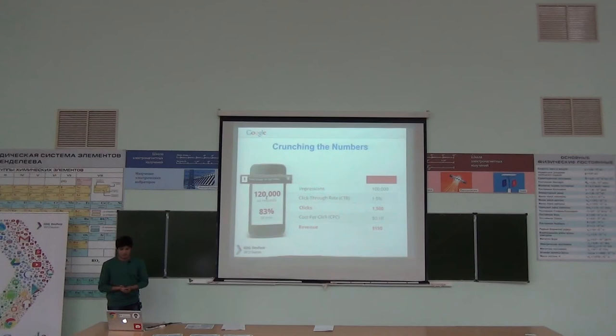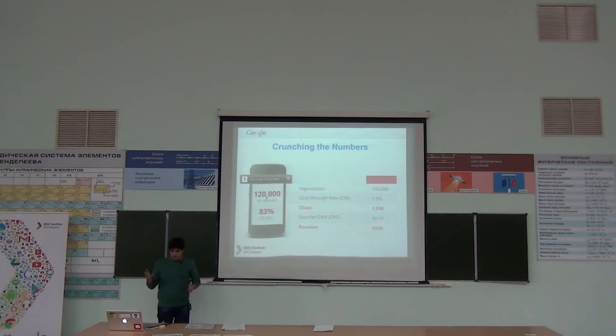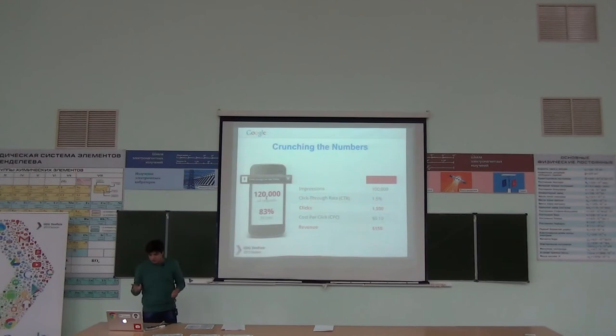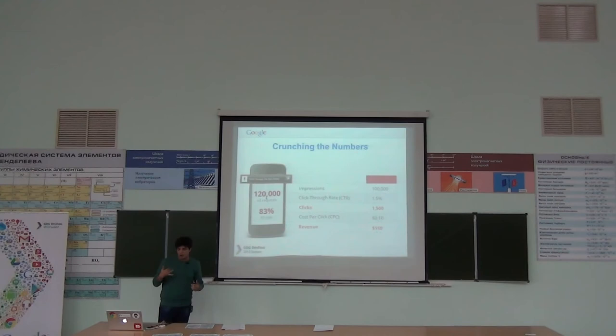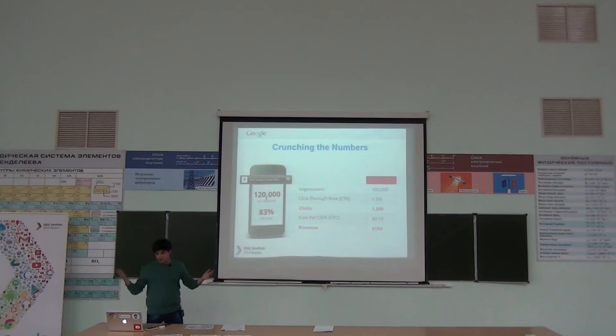Let's see how reporting works. For example, you have 120,000 ad requests made in your app. The fill rate is 99-plus percent, so for every request you're almost guaranteed an impression. The CTR is 1.5 clicks per 100 impressions, so total clicks would be 1,500. If the CPC is 10 cents per click, the total revenue for a week would be $150. So this is a good model.